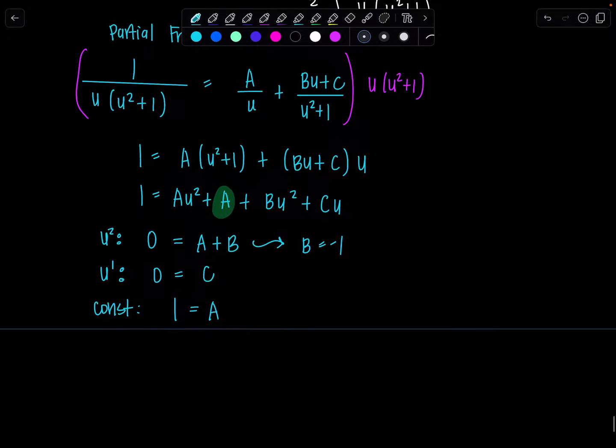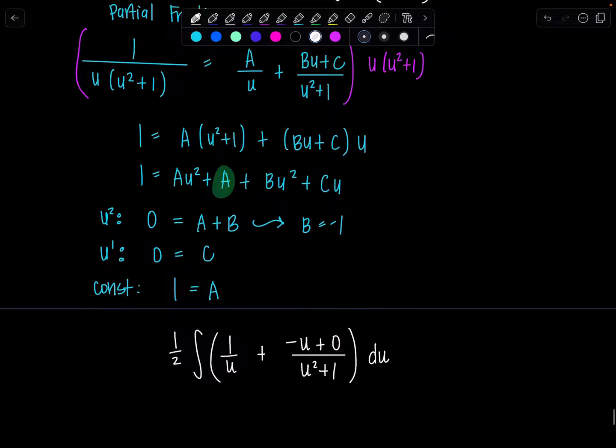So now I have the partial fraction decomposition. I can rewrite my integral. So remember, we had that 1 half outside. A over u is 1 over u plus B u plus C. So that would be negative u plus 0 over u squared plus 1 du. Okay. We can rewrite this now. Now this is 1 half integral, 1 over u minus u over u squared plus 1 du.